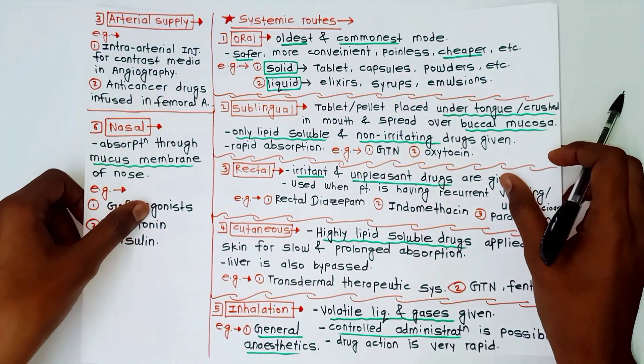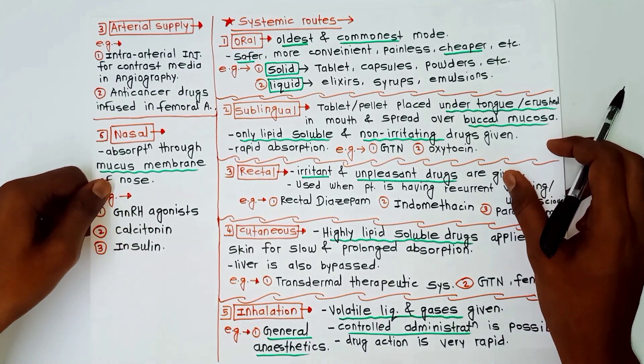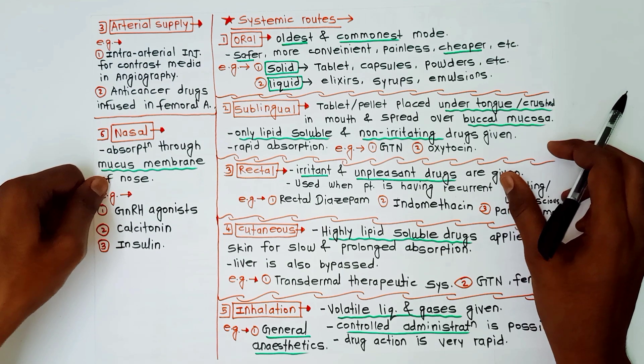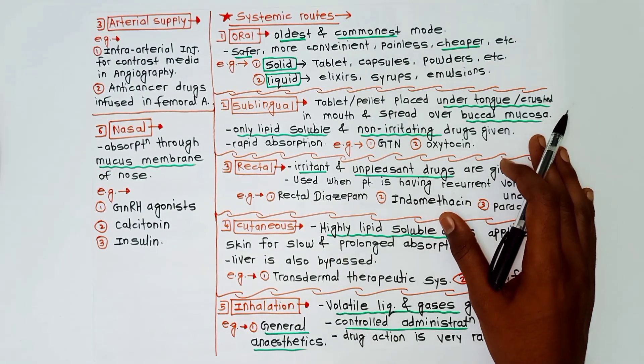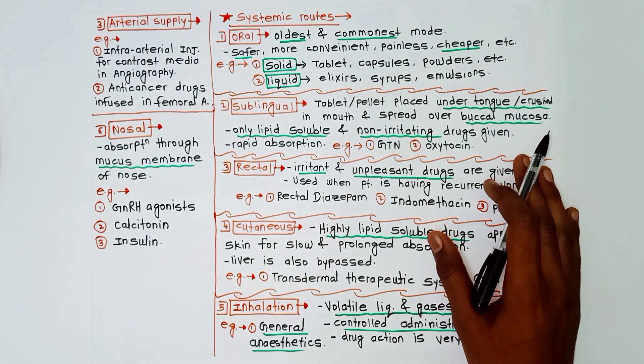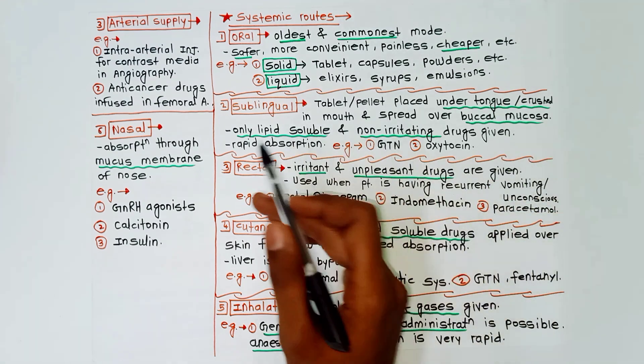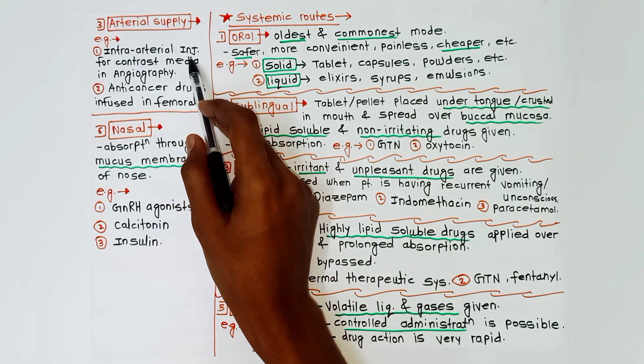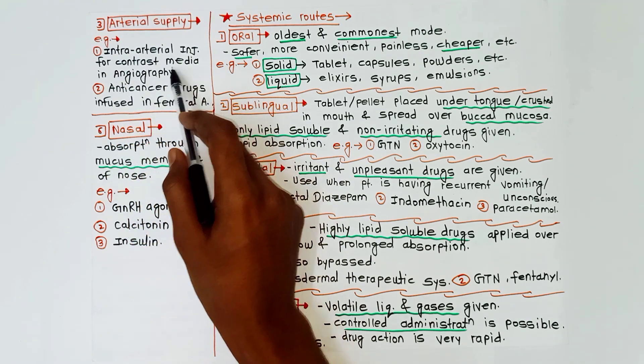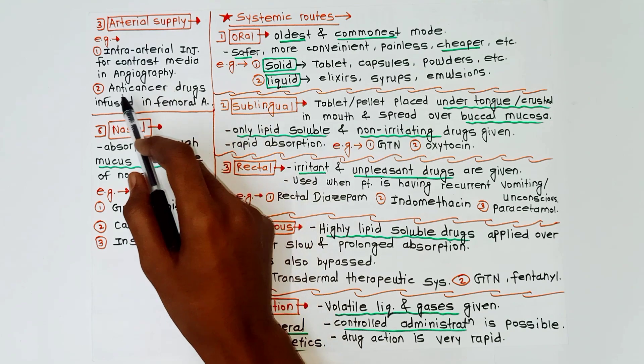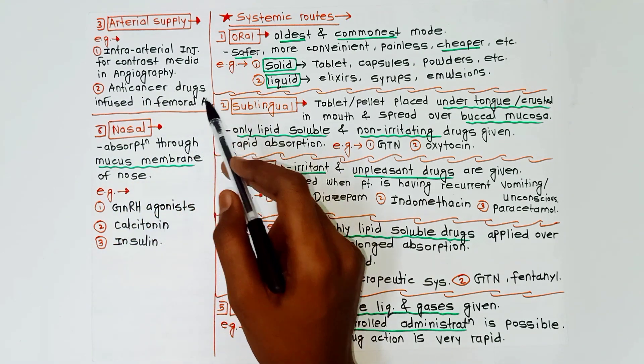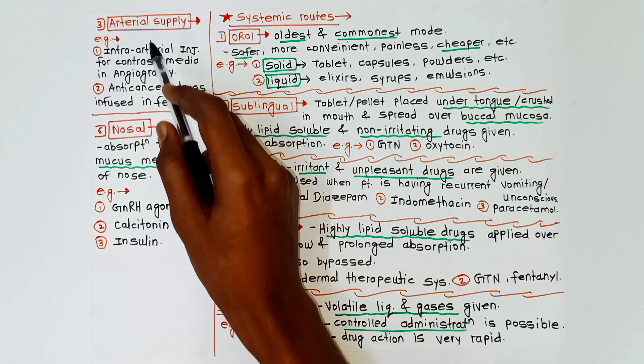Next we will go to the arterial supply, the third subgroup in the local route. Example of arterial supply is intra-arterial injection for contrast media in angiography, and anti-cancer drugs are infused in femoral artery or brachial artery.